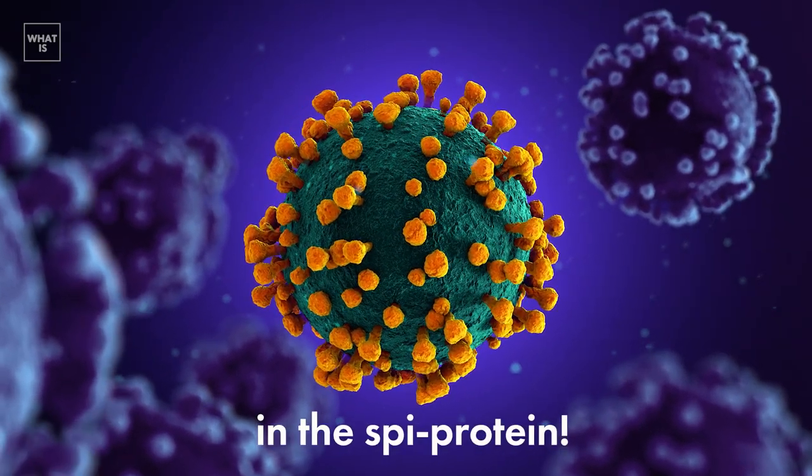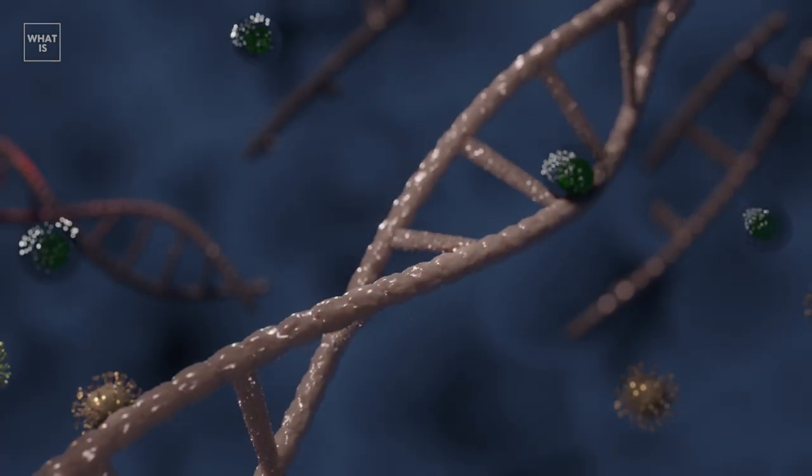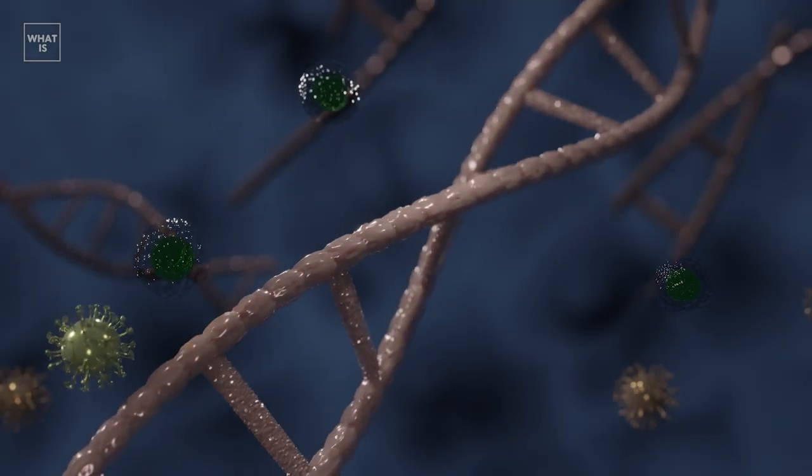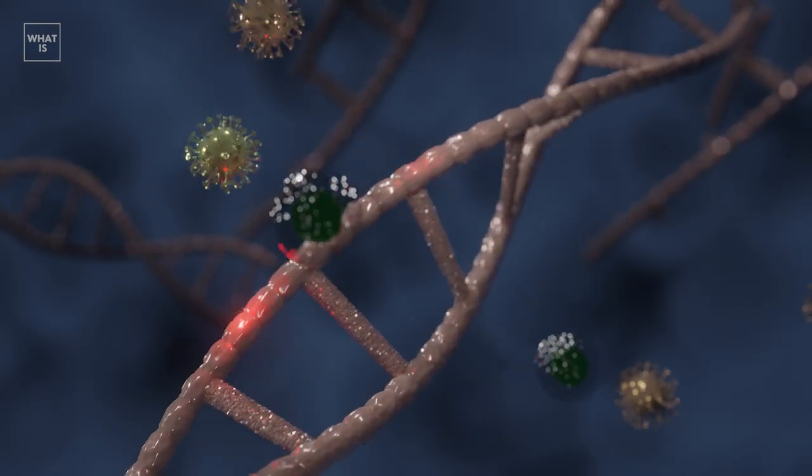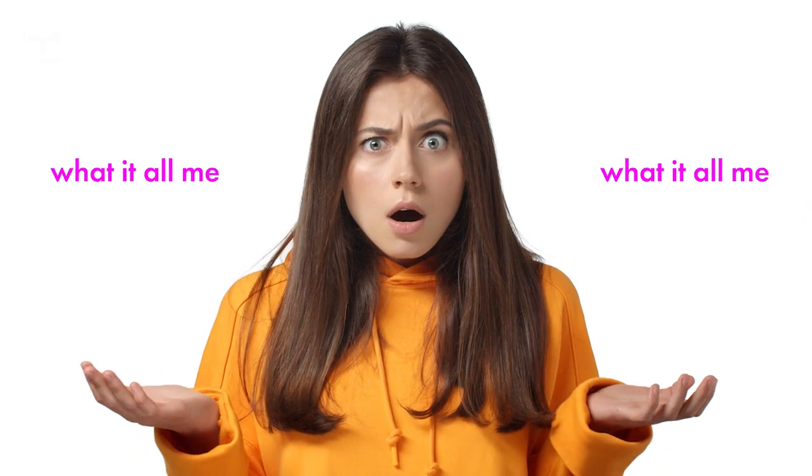In the so-called spike protein, scientists believe that about 50 nucleotide substitutions occurred precisely with the participation of the nucleic acid responsible for protein synthesis. And those are 15 amino acids. Now let's see, what does that mean?